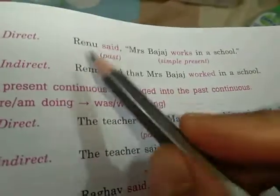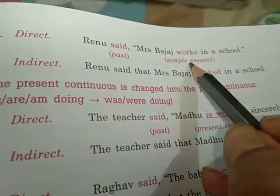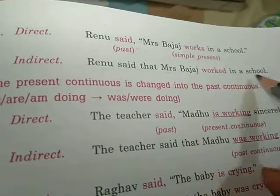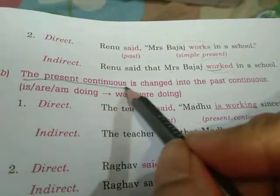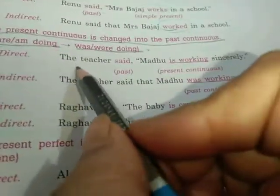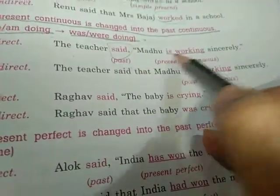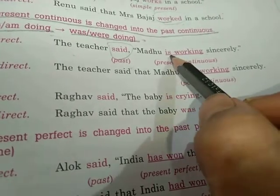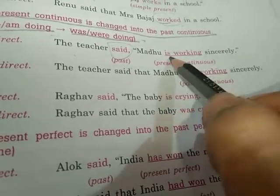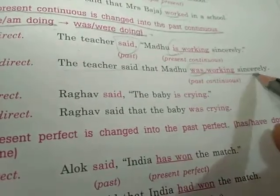Rule 2: If the reporting verb is in past tense, the tenses in the reported speech are changed into the corresponding past tense. The simple present is changed to the simple past — 'does' becomes 'did'. For example: 'He said Suresh needs a new uniform' becomes 'He said that Suresh needed a new uniform.' Also: 'Renu said Mrs. Bajaj walks in a school' becomes 'Renu said that Mrs. Bajaj walked in a school.' The present continuous changes to past continuous — 'is/am doing' becomes 'was/were doing'. So: 'The teacher said Madhu is working sincerely' becomes 'The teacher said that Madhu was working sincerely.'